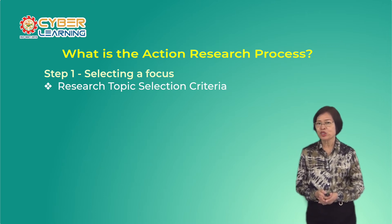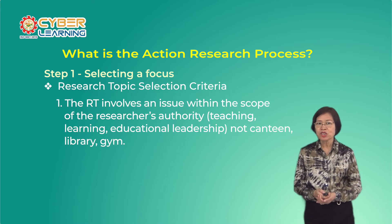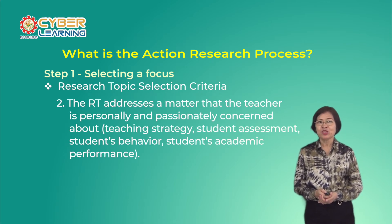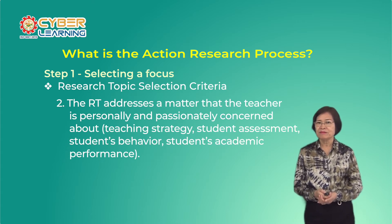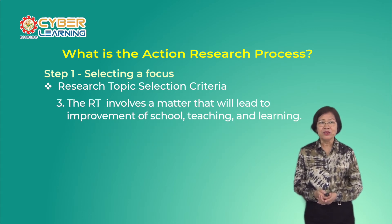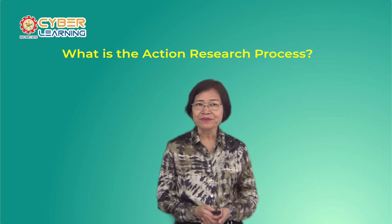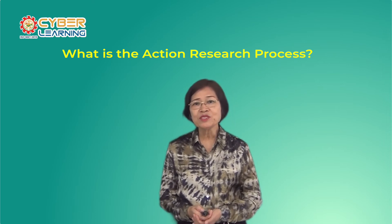The selection of an appropriate research topic should meet three criteria. One, the research topic involves an issue within the scope of the researcher's authority, such as teaching, learning, and educational leadership — not content, library, or gym. Two, the research topic addresses a matter that the teacher is personally and passionately concerned about, such as teaching strategy, student assessment, student's behavior, student's academic performance, and the like. And three, the research topic involves a matter that will lead to improvement of school's teaching and learning. For example, you decide to focus on student's behavior in the class — then your research topic is student's behavior in the class.